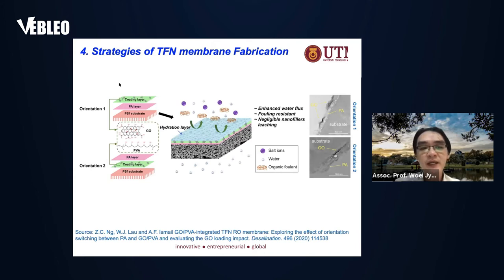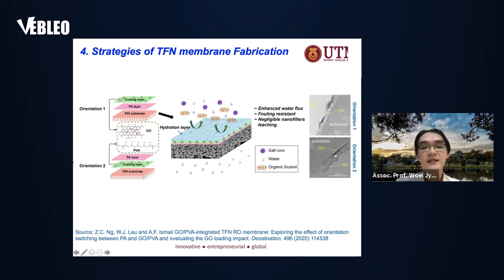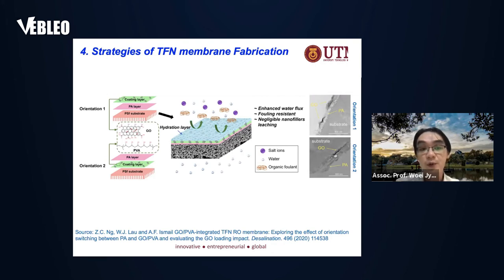To solve these problems, our group studied another more practical method to introduce graphene oxide on the membranes. We investigated two different orientations. The first orientation is where we have graphene oxide together with a PVA solution coated on top of the polyamide layers. In the second orientation, we have the same solution but instead of coating on top of the polyamide layer, we coat on top of the substrate before forming the polyamide layer. We want to see which one is more practical to produce a membrane.